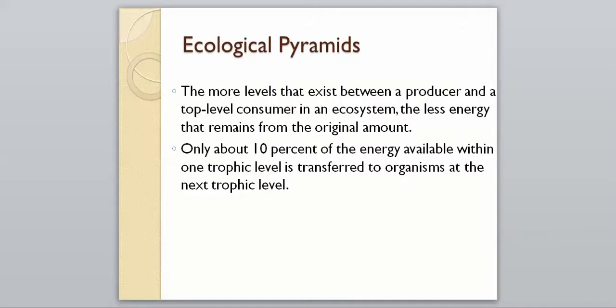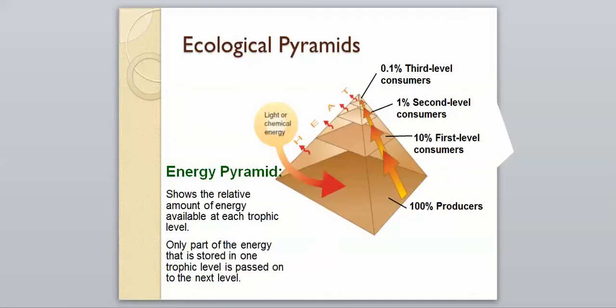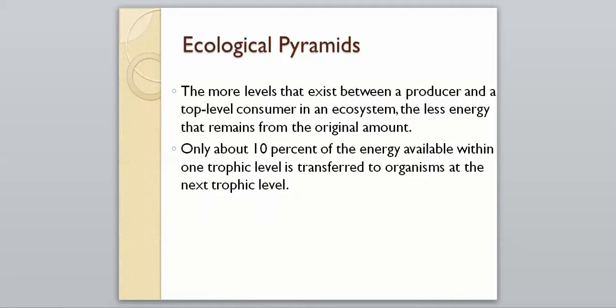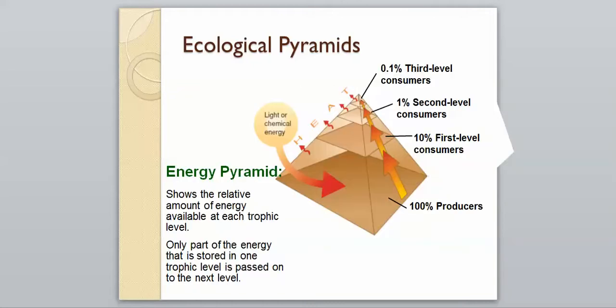The more levels that exist between a producer and a top-level consumer in an ecosystem, the less energy remains from the original amount. We started with 100 at the bottom, and by the time we make it to the top, it's 0.1%. Only about 10% of the energy available within one trophic level is transferred to organisms at the next trophic level. Only 10% of that total is passed on each time, so it decreases and decreases as it goes up.